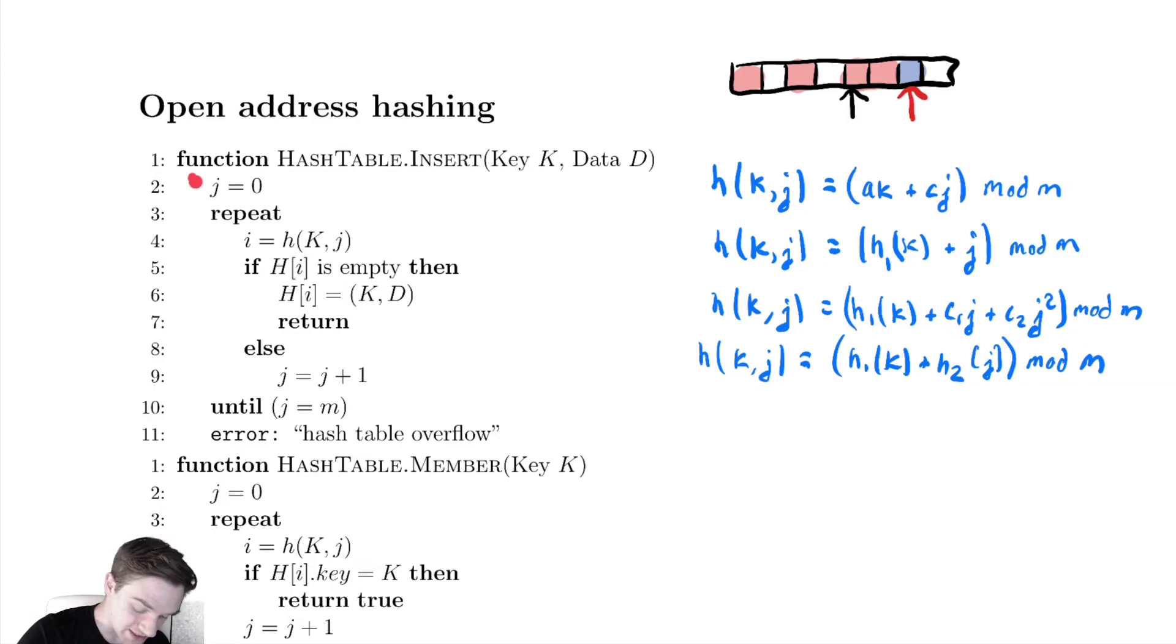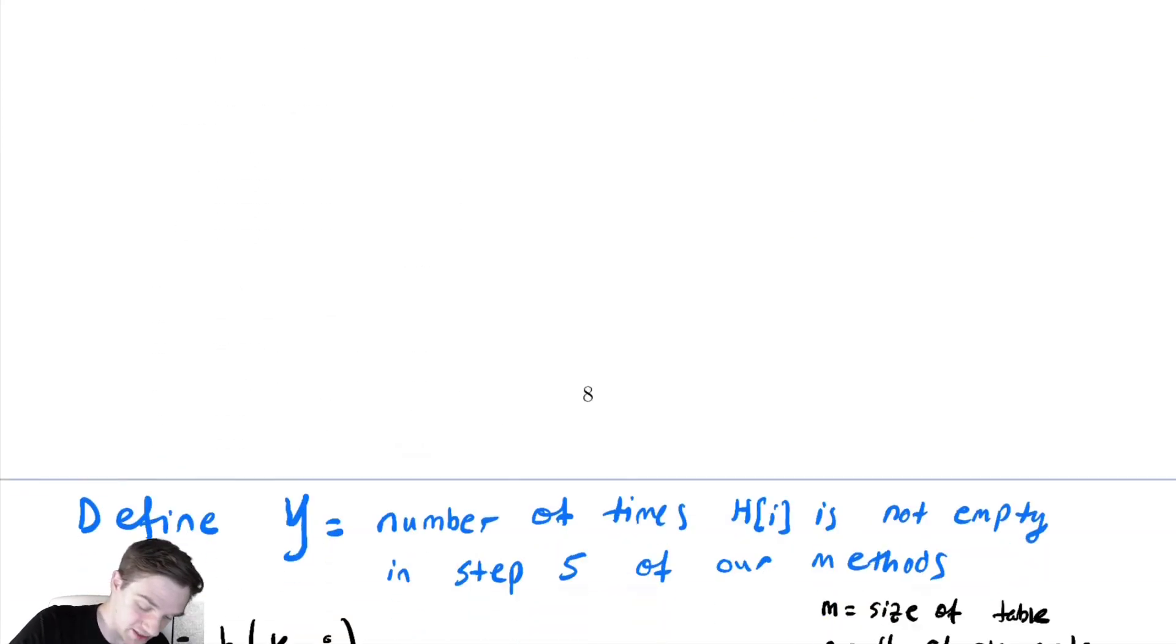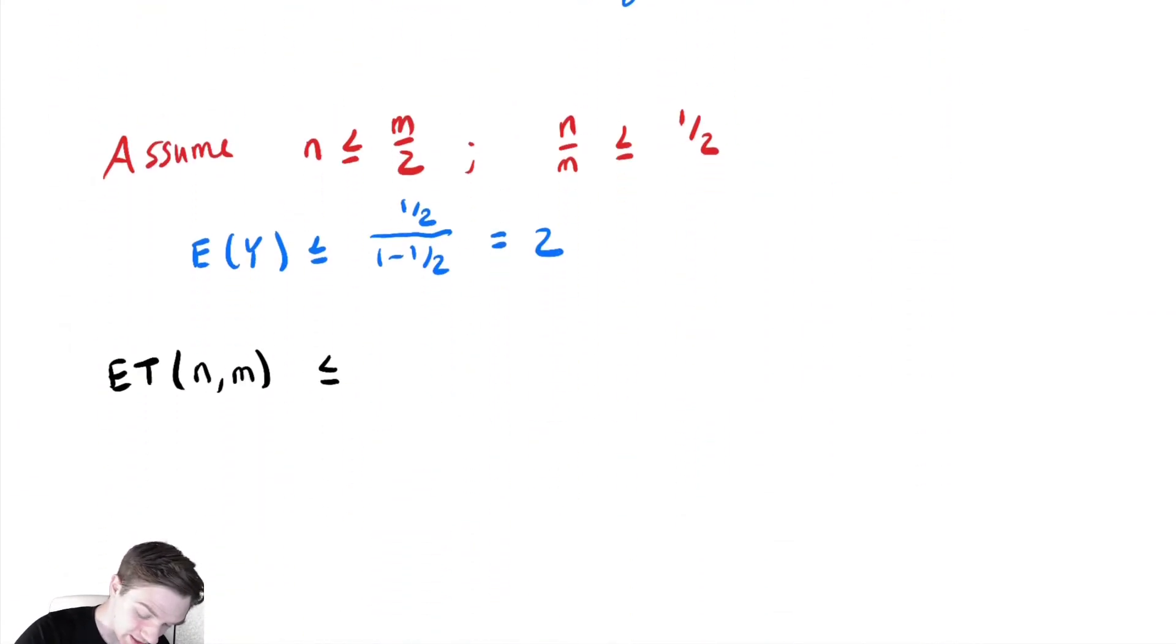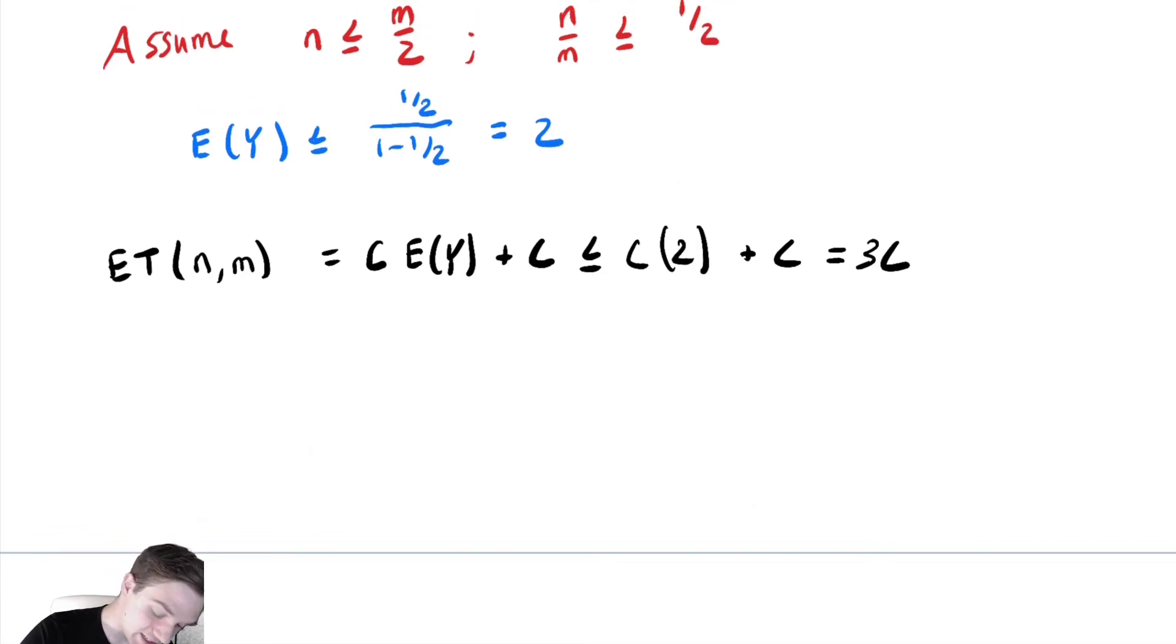Looking at the code, we have constant time operations throughout, and it takes additional time each time h[i] isn't empty. So our runtime is c*E[Y] + c. This is actually an equality, then less than or equal to c*2 + c = 3c. Therefore the expected time is in Θ(1).